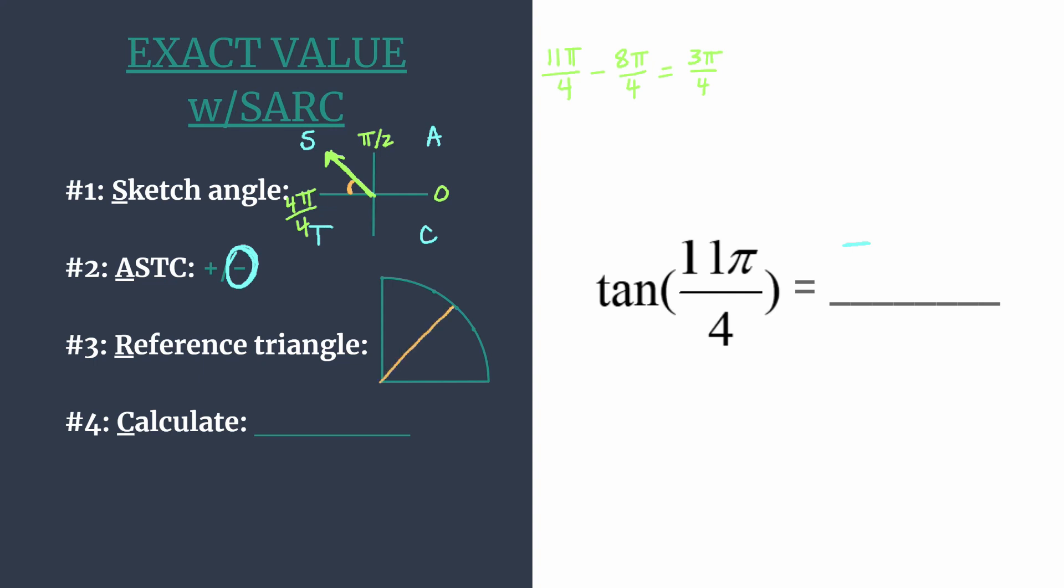Which is also 45 degrees. So our reference triangle, our special right triangle, is going to be a 45-45-90 special right triangle. And the coordinates that correspond to this triangle are √2 over 2 for both the x and the y. And we can do this in the first quadrant. We don't have to worry about negative signs because we already decided that in step 2.